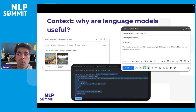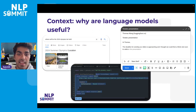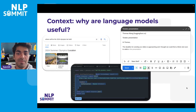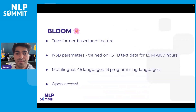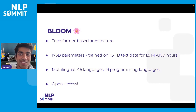Language models have a wide variety of use cases, most notably in question answering and autocomplete. Because of the multilingual nature of the BLOOM model, we can also use it to autocomplete code. Now, onto the BLOOM model — BLOOM stands for Big Science Large Open-source Open-access Multilingual language model.